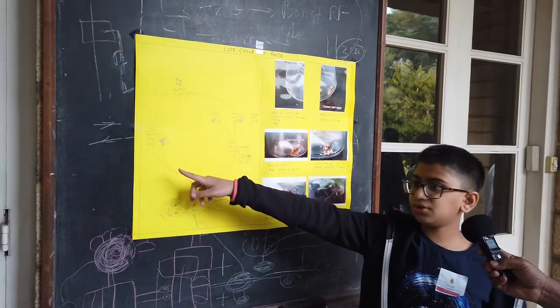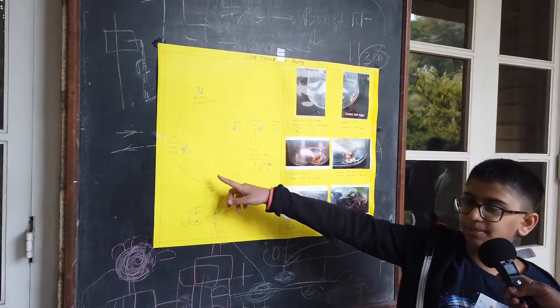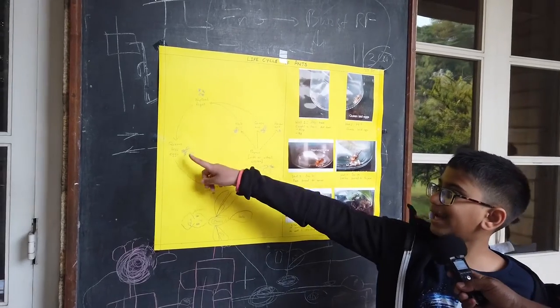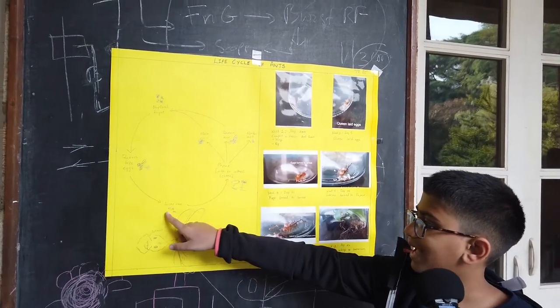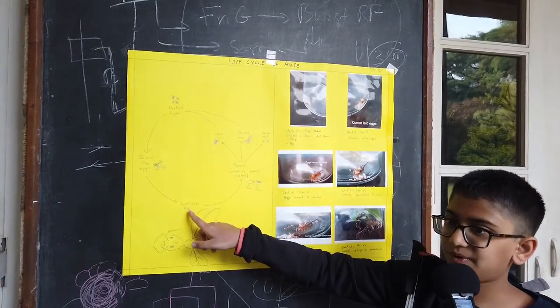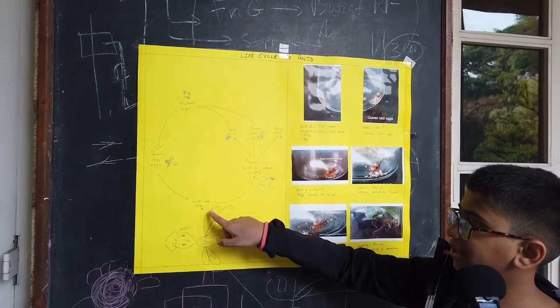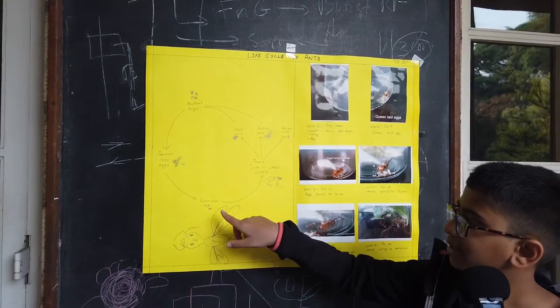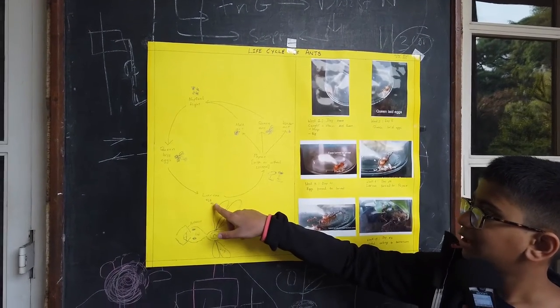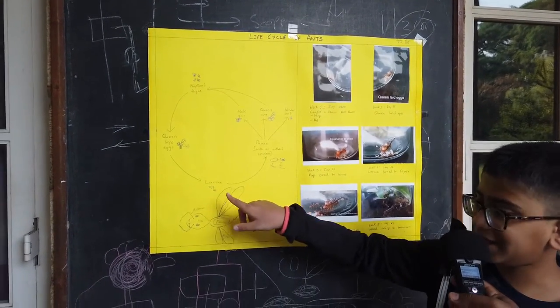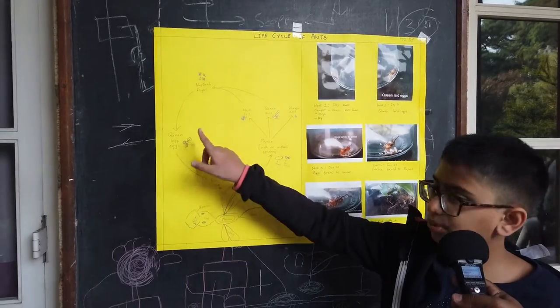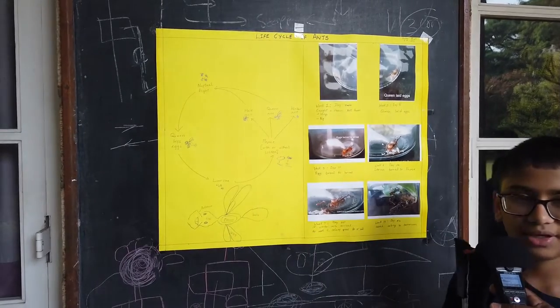This is how it all begins. The queen ant lays eggs. The eggs then hatch into larvae, which are cared for either by the worker ants or the queen ant herself.